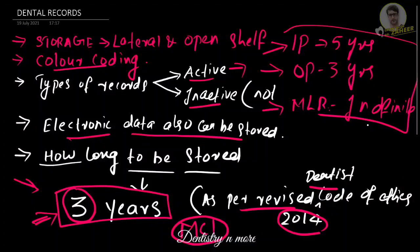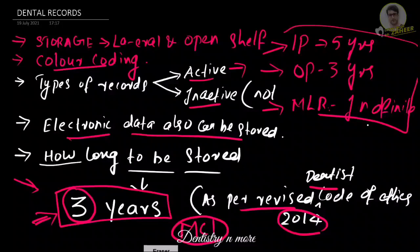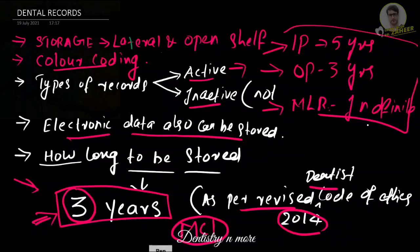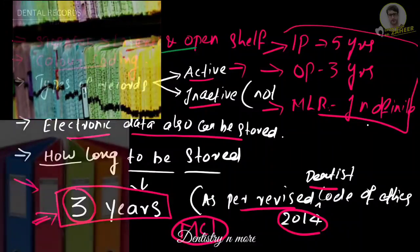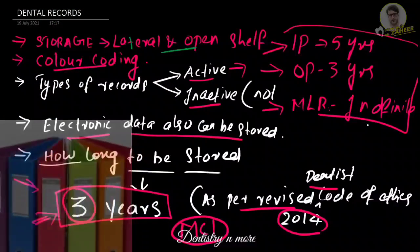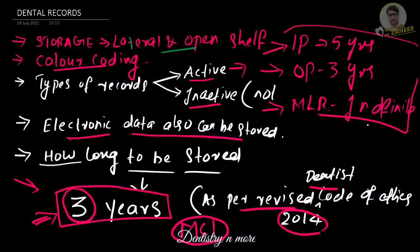Regarding how to store records, we need shelves — preferably lateral and open shelves. There should be a color coding system. Color coding is very useful: many dental offices use a color-coded filing system for patient record files. We need color-coded labels, usually based on the first two letters of the patient's last name, to differentiate active and inactive data. In this way, we can assign different colors to different sets of patients and categorize them accordingly.